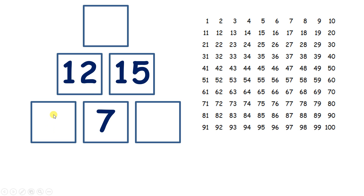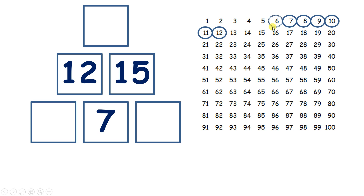So here we have seven plus something makes 12. So if we subtract seven from 12, counting back one, two, three, four, five, six, seven, we get five.